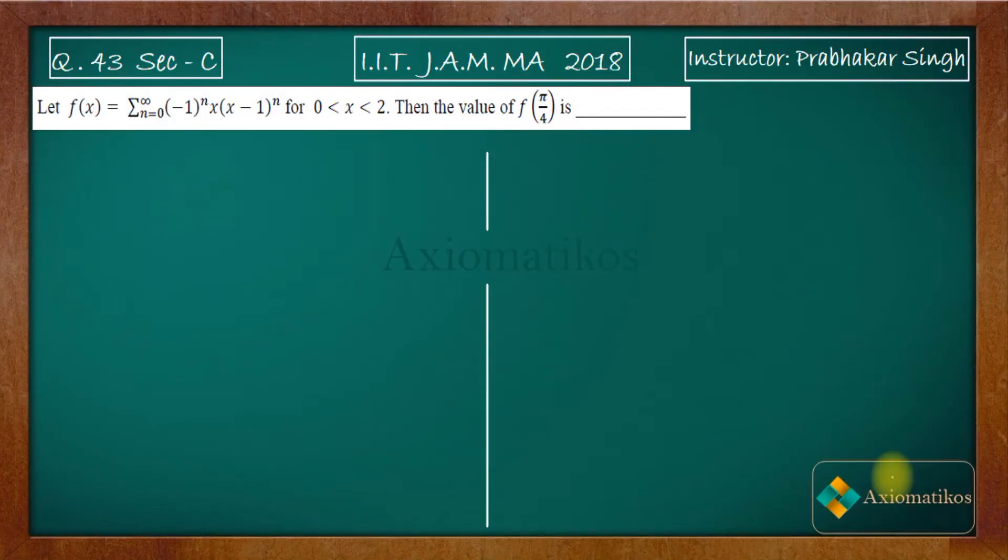Hello dear students, welcome to Axiomatics course. This video is part of the solution series for IIT JAM 2018 and we are doing problem 43 of section C. This problem is from analysis but we are not going to use much analysis here. We will do it by general things. Have a look.